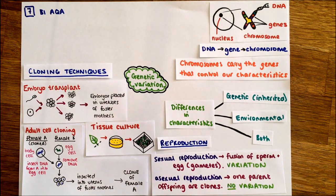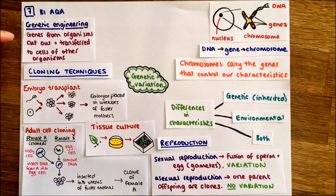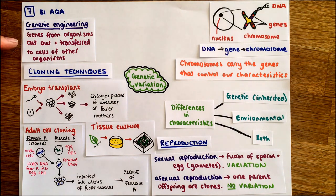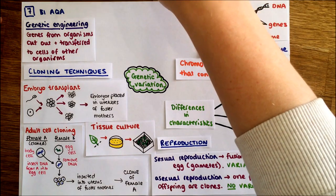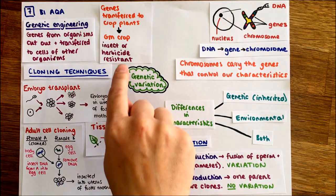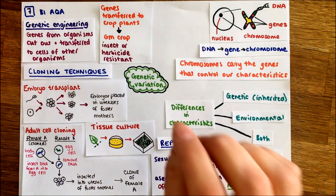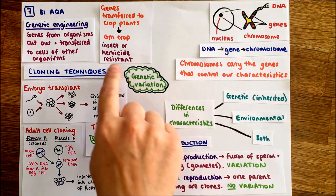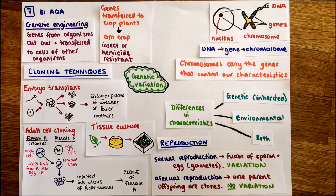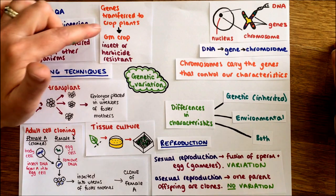We can also do genetic engineering, where we take genes from organisms and cut them out. For example, the gene for insulin is removed from a human and transferred into bacteria. The bacteria grow and divide and produce human insulin for diabetics who don't produce their own. In crop plants, we might insert a gene giving insect resistance or herbicide resistance. A GM crop sprayed with weed killer won't die, but the weeds will. Or a plant might produce a toxin from an inserted gene that kills insects when they try to eat the leaf.